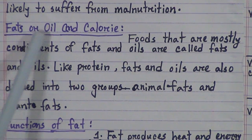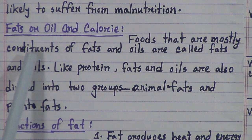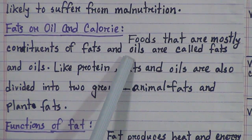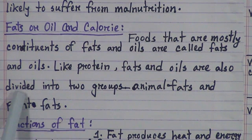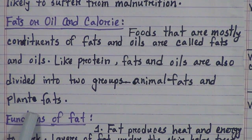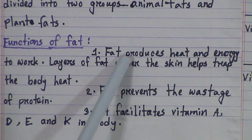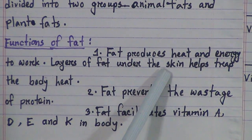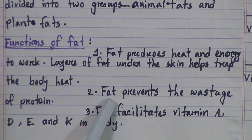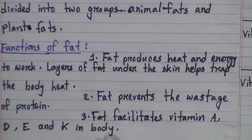Now we will discuss fats or oils and calories. Foods that are mostly constituent of fats and oils are called fats and oils. Like protein, fats and oils are also divided into two groups: animal fats and plant fats. The functions of fat are: Number 1, fat produces heat and energy to work, and layers of fat under the skin help trap body heat. Number 2, fat prevents the wastage of protein. Number 3, fat facilitates vitamins A, D, E and K in our body.